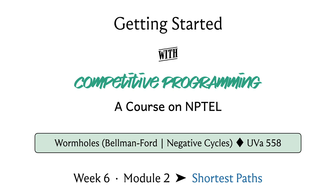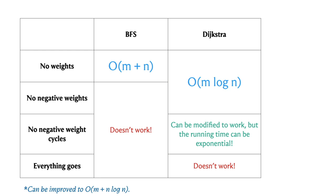In the first segment we will talk about the general algorithmic approach, and in the second segment we will introduce the Wormholes problem statement and work through its implementation. To recap what we have seen so far, we have broadly identified four different scenarios based on the nature of edge weights: no weights at all, non-negative edge weights, negative edge weights without negative cycles, and finally negative cycles allowed.